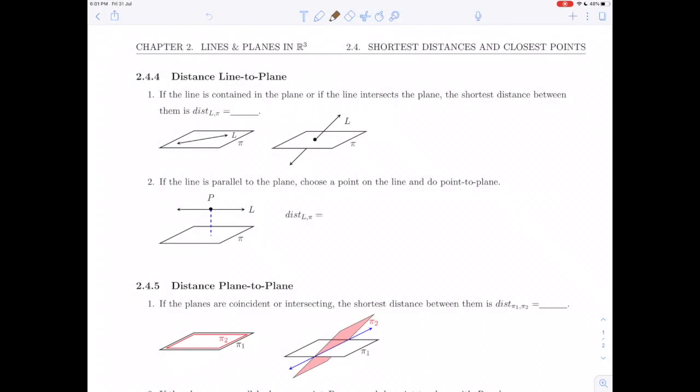We are going to finish up section 2.4 about shortest distances and closest points by doing section 2.4.4, the distance from line to plane, and section 2.4.5, the distance from plane to plane. So let's start with the distance between a line and a plane.